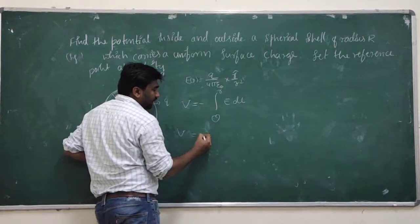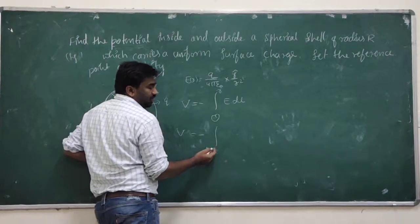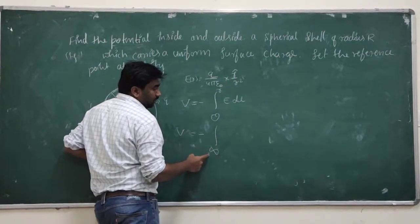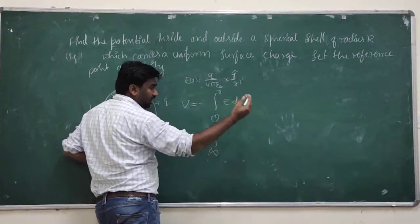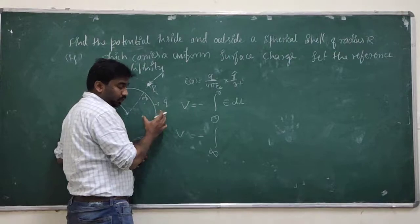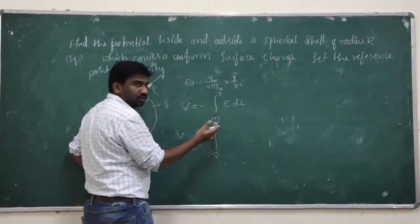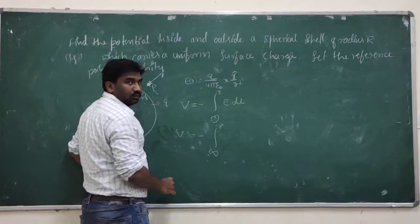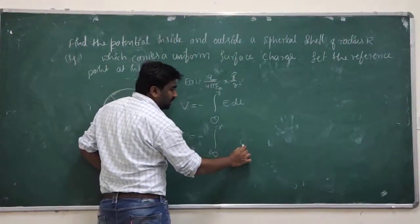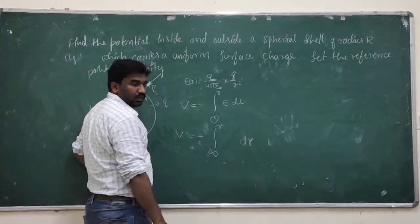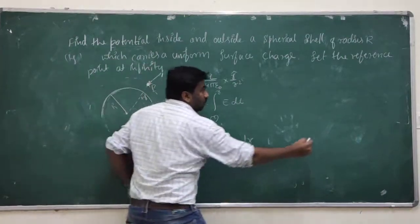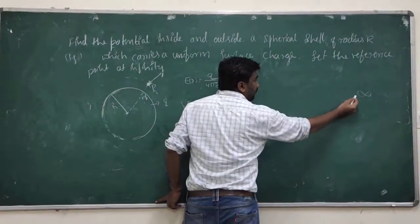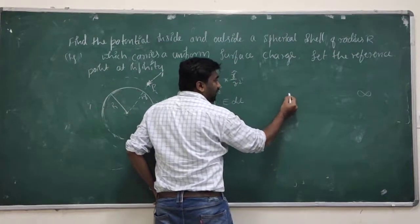V is equal to minus of the integral, where my reference point is at infinity as mentioned in the question. So I am bringing this charge from infinity to a given point r, and our displacement vector dl is dr.